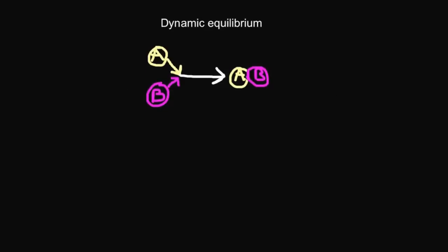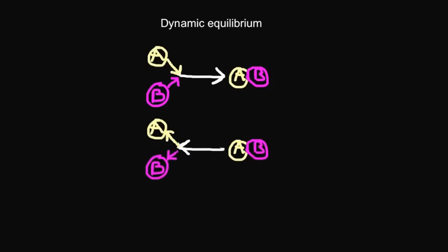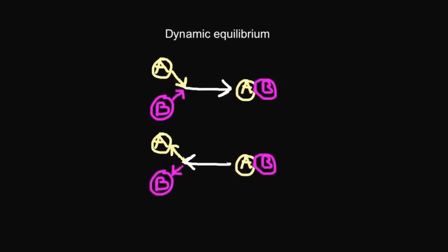Reversible reactions reach something called dynamic equilibrium. In this example here we have A reacting with B, so they bump together and form AB. What can also happen in a reversible reaction is that this AB joined together can break down into A and B separately. So both reactions are going in different directions.